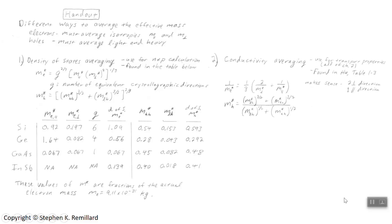So if you take the actual mass of the electron, 9.11 times 10 minus 31 kilograms, and multiply it by 1.09, you have the effective mass of electrons in silicon. Multiply by 0.593, and you have the density of states effective mass of holes in silicon. The other averaging scheme is the conductivity effective mass, which is used throughout chapter 2 for all things having to do with particle transport. Values for it can be found in table 1-3 of our textbook. They're also computable from the numbers in the table for the mass of electron parallel and perpendicular or heavy hole and light hole mass — just different averaging expressions.